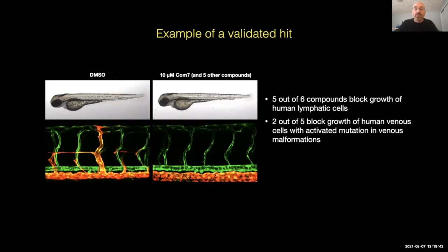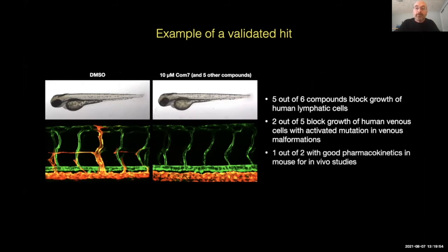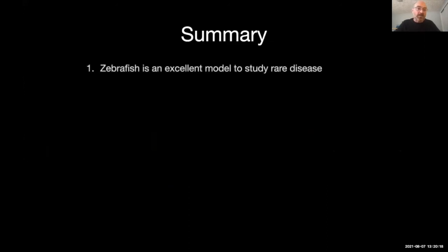Two out of the five compounds also block the growth of human cells that have an activated mutation associated with venous malformation, and we're now testing them on RASA1 mutant cells. We've proceeded to do pharmacokinetic studies — we want to know the half-life of the compound in mouse circulation, so that when we go to do drug studies and xenograft studies where we can put a malformation onto a mouse, we know how much drug we need to give to try to block that.